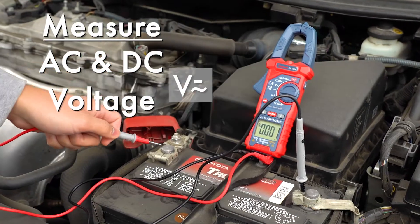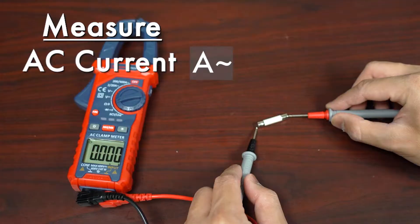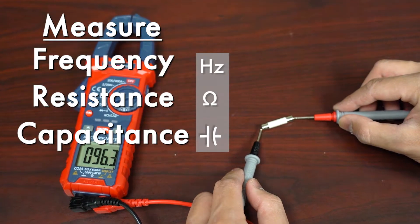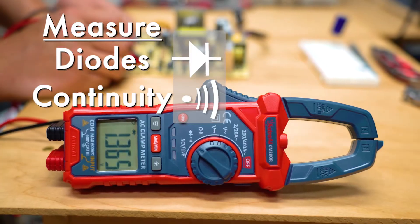Measure everything from AC and DC voltage to AC current, frequency, resistance, and capacitance. You can also test diodes and circuit continuity.